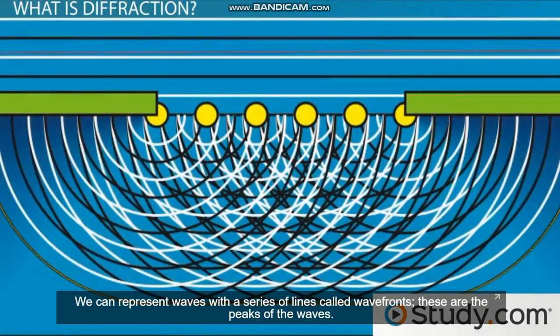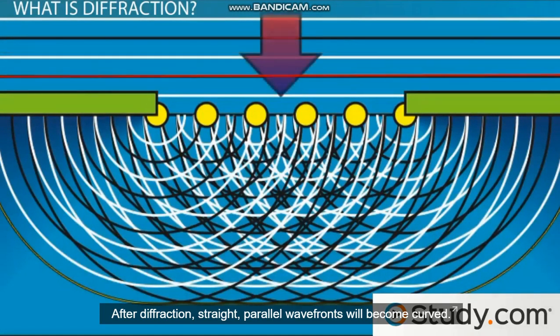We can represent waves with a series of lines called wavefronts. These are the peaks of the wave. After diffraction, straight parallel wavefronts will become curved, as you can see in this diagram.